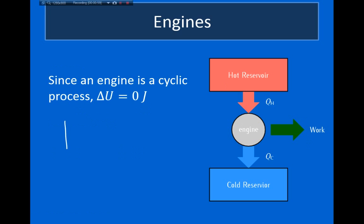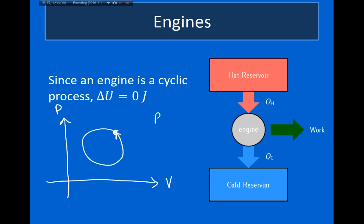Heat engines are always described by cyclic thermodynamic processes. This means that on a pressure versus volume graph, the process ends at the same place it starts — so the initial pressure equals the final pressure, and the initial volume equals the final volume. Because of the ideal gas law, this tells us the initial temperature equals the final temperature, and because internal energy is related to temperature, the change in internal energy of the system must be zero.